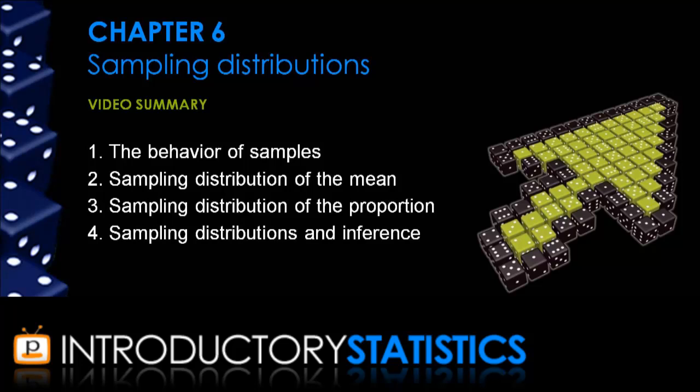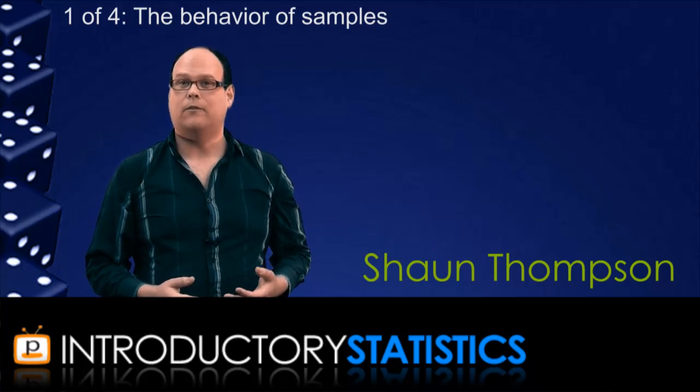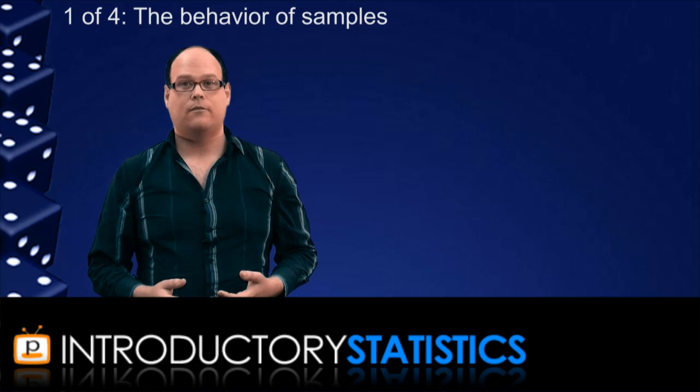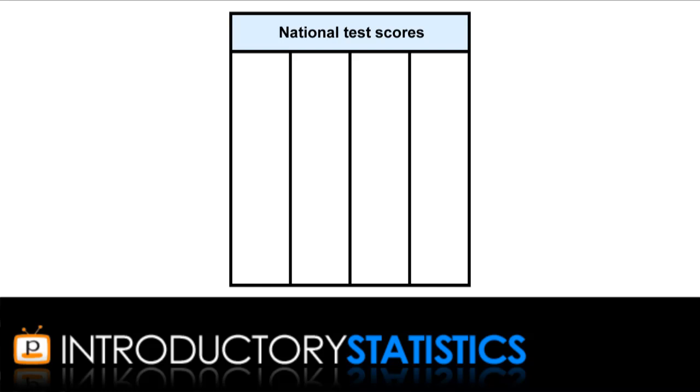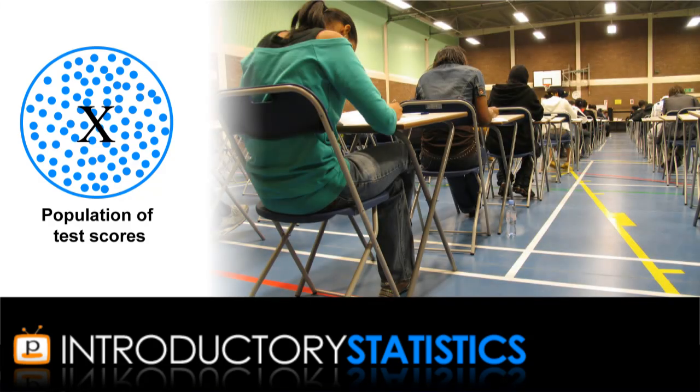We'll start with behaviour of samples. If you're trying to discover something about a population, what you do is collect and measure a sample. For example, suppose millions of kids from across the country have just done a general aptitude test. This effectively produces millions of test scores, an entire population of test scores. A small academic team wants to study the results, but they don't have the resources.